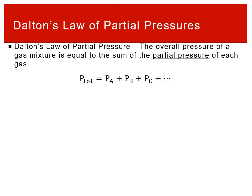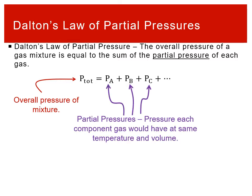This is described by Dalton's Law of Partial Pressure, which says that the overall pressure of a gas mixture is equal to the sum of the partial pressures of each gas. We have P-total for the total pressure of the mixture, and P_A, P_B, and P_C are the partial pressures — the subscripts correspond to the names of the gases, usually the chemical formula such as N2 or CO2. The partial pressure is the pressure that each component gas would have at the same temperature and volume if those molecules were by themselves.